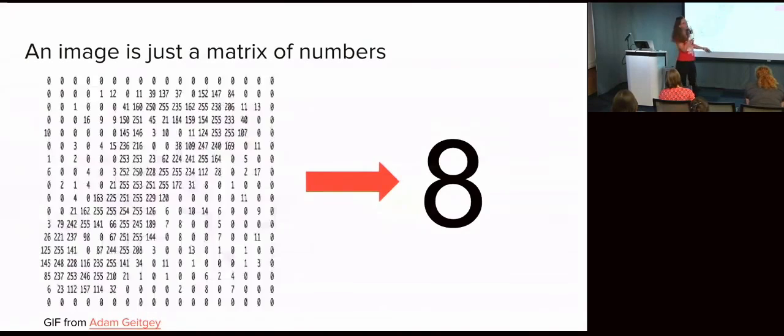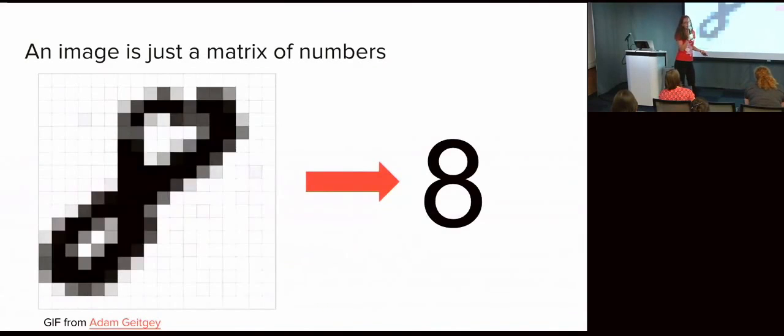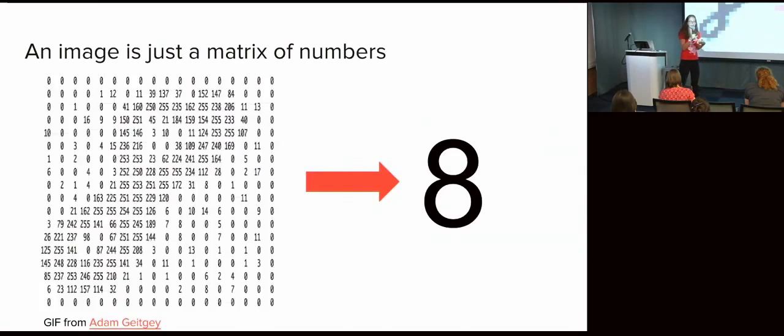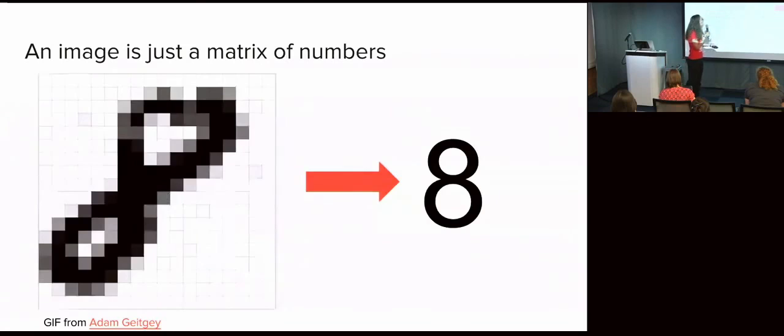And to the computer, an image is just a matrix of numbers. Here, each pixel corresponds to a single number. In this case, it's zero for white pixels, 255 for black, and every possible shade of gray in between. And we just need a function going from this matrix to output eight. Deep learning is one possible function for that.